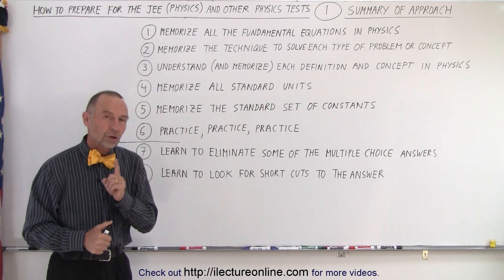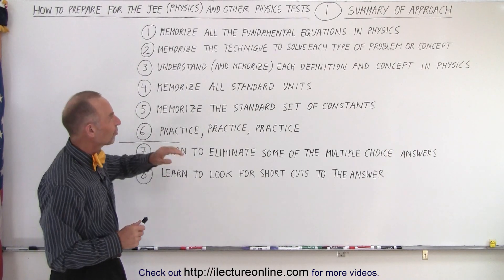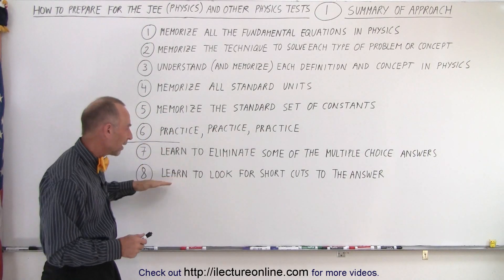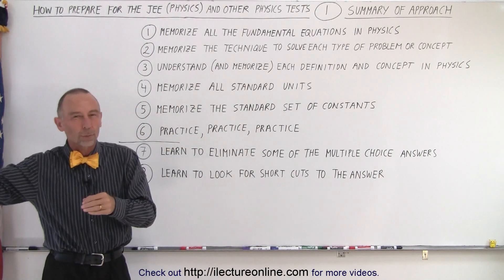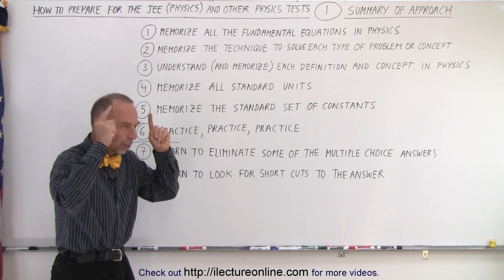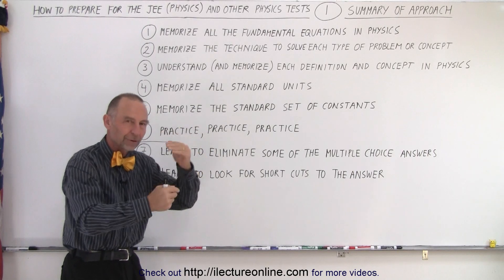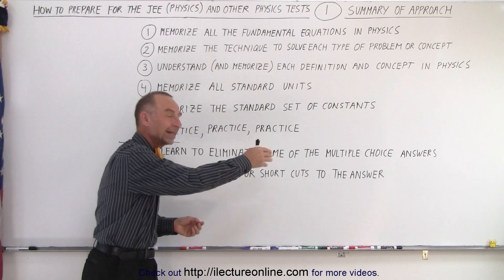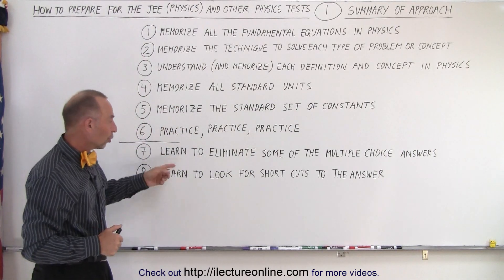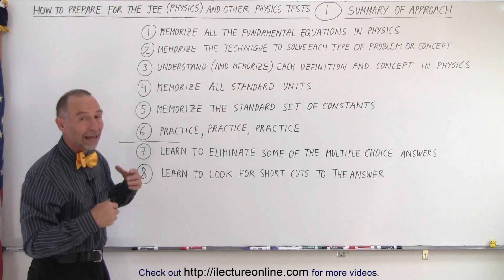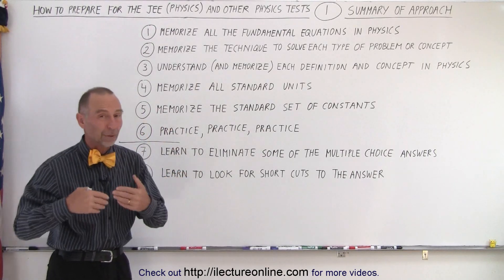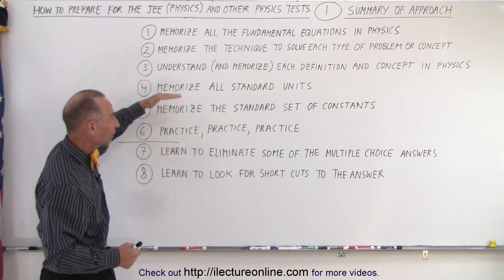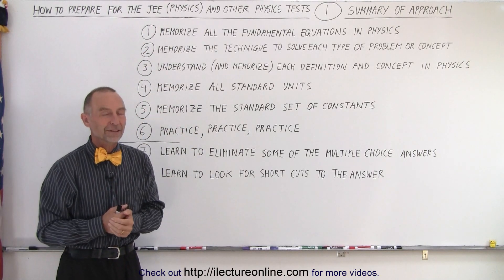Also, learn to look for shortcuts to the answer. Sometimes, if you understand and have memorized the concepts — going back to point three — you can shortcut through a problem. Instead of working out the whole thing, you can recognize the concept, take a ratio or apply a quick method, and get to the answer quickly and move on. We'll show you examples of these strategies to help you get through the test faster and with a higher probability of a better score, along with examples of all these things so you can be well prepared.